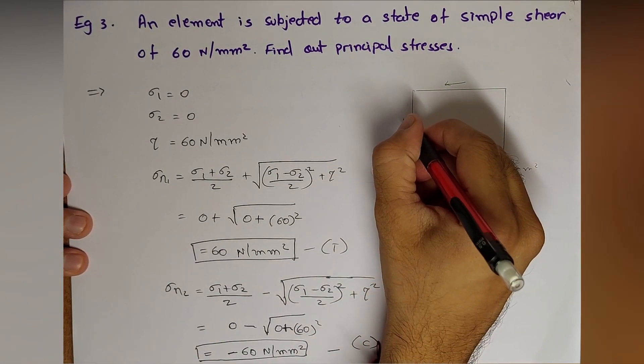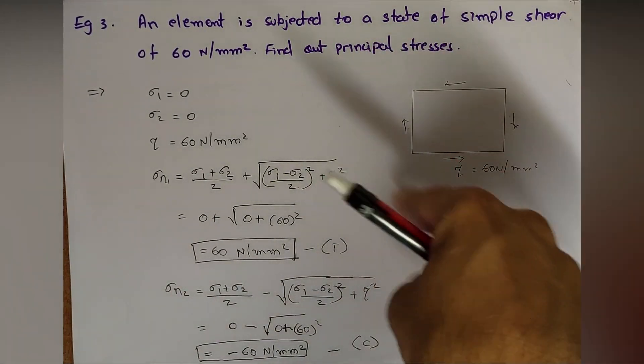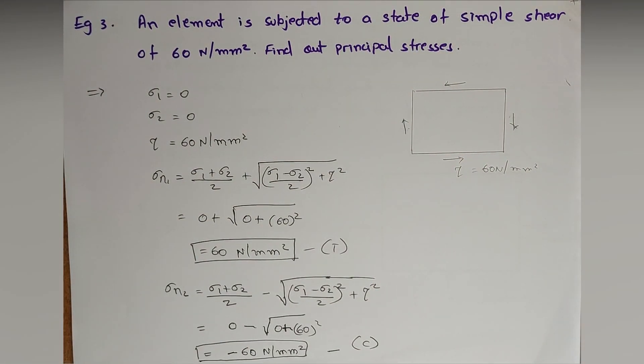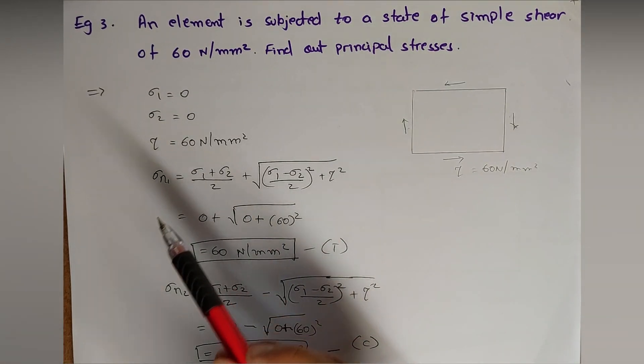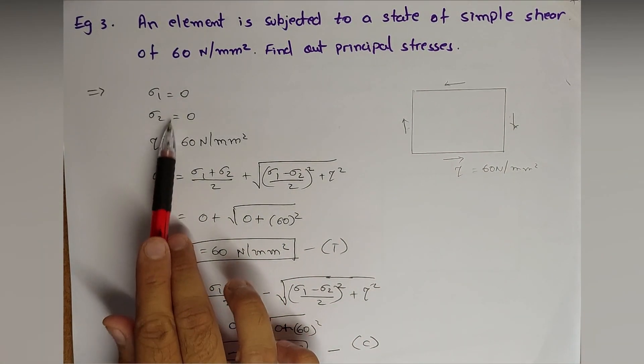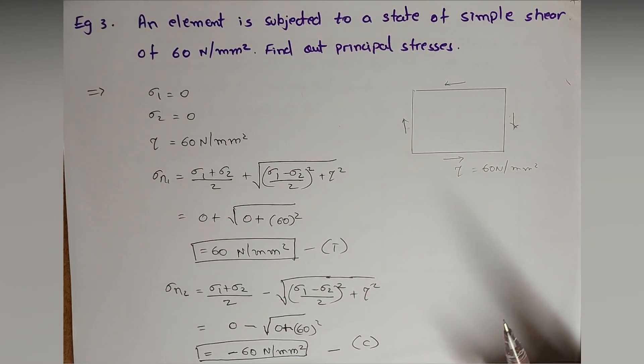So tau is 60 Newton per mm square as mentioned. Sigma one is zero, Sigma two is zero. There is no any forces on mutually perpendicular plane, I mean stresses on mutually perpendicular planes.